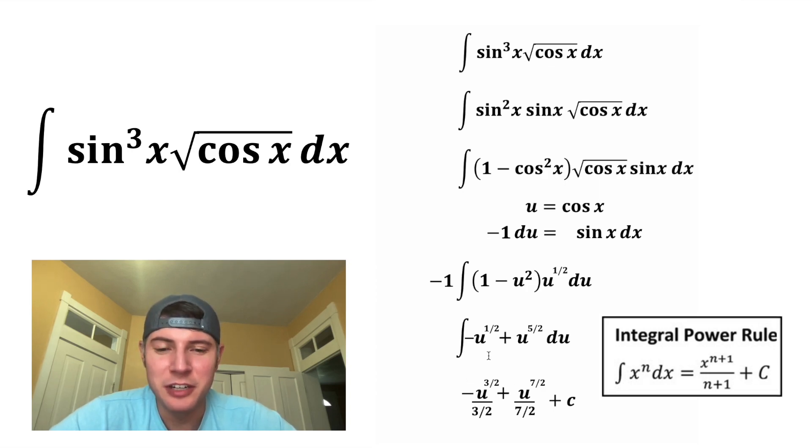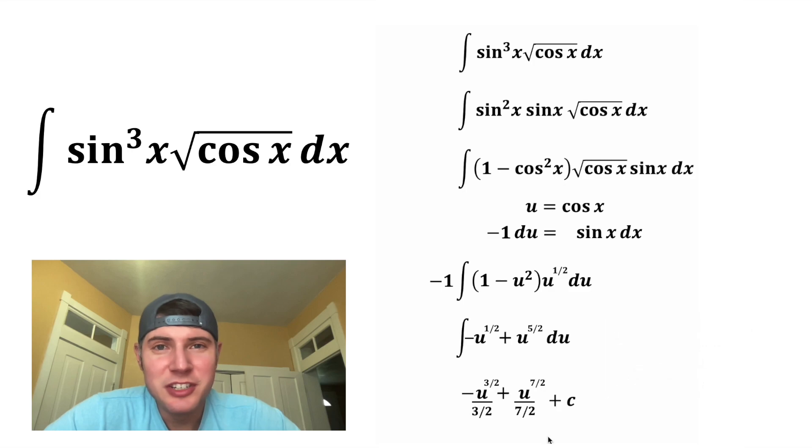Anytime you have an indefinite integral, you have to remember to do plus c. Now we can just simplify. This over seven halves can be thought of as divided by seven halves, or you can think of it as multiplied by two sevenths, or in other words, two sevenths of this. And same thing for this three halves on bottom. It's going to become two thirds. And now we're fully simplified.